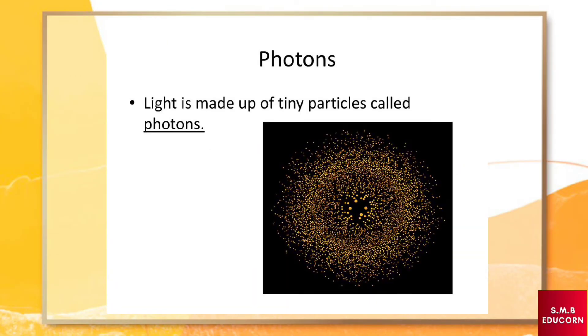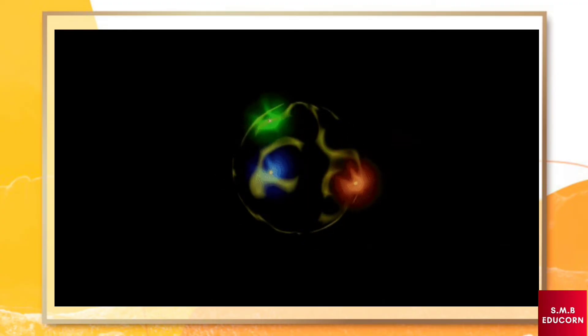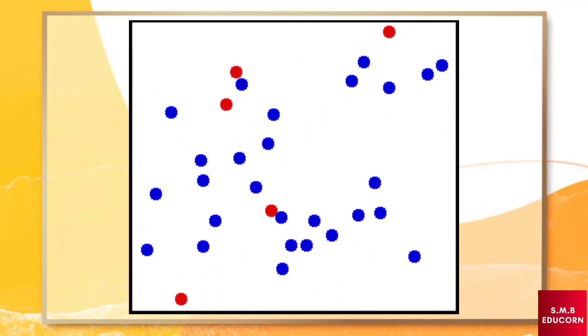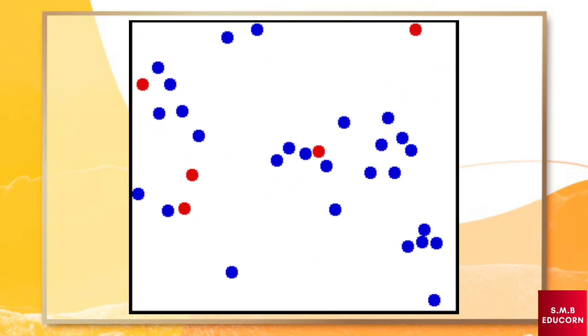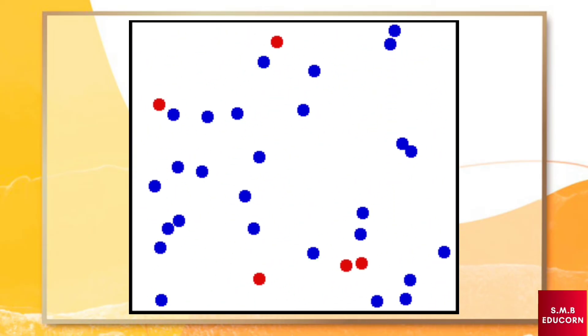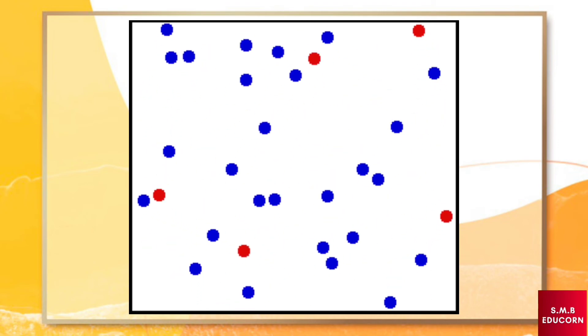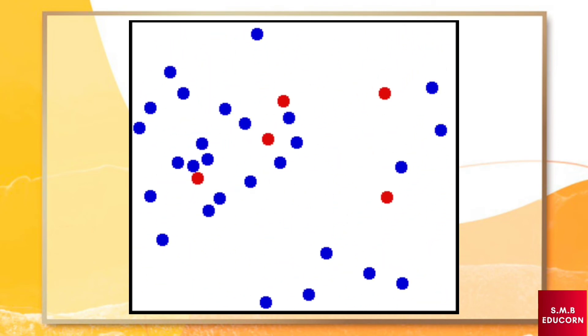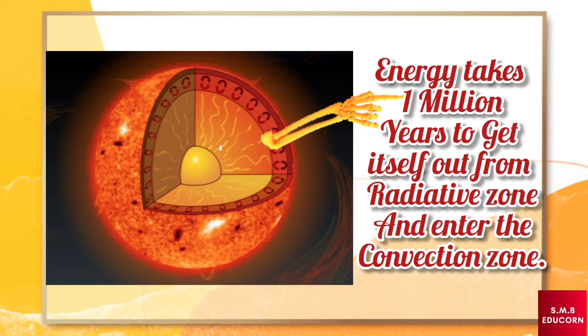And this light is made up of extremely tiny particles called photons. When these photons move through the radiative zone, they heat other particles on their way out. This makes them change direction and bounce around. The photons travel in this manner take a very long time to make it out. And that's why energy takes 1 million year to get itself out from the radiative zone and enter the convection zone.